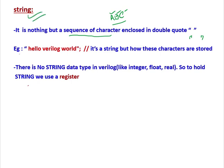Here is the example: 'Hello Verilog world.' This is a double quote, and inside this double quote we have written Hello Verilog world. So this is a string. But how are these characters stored?